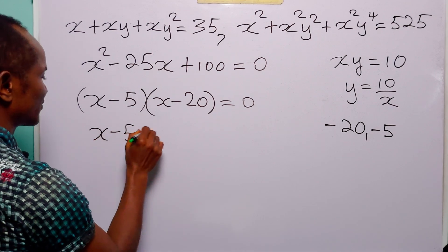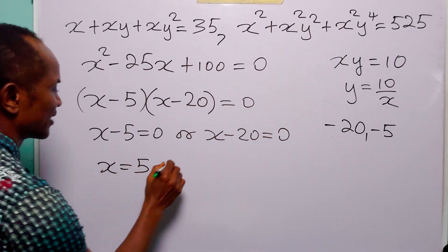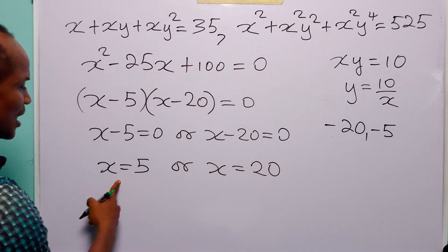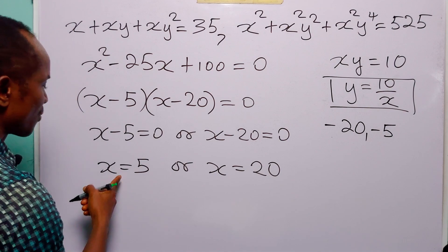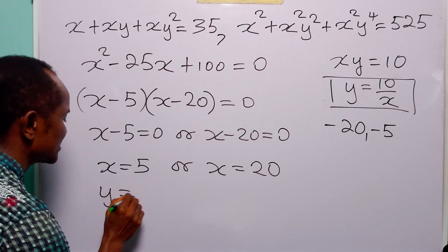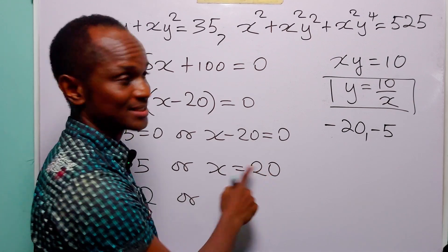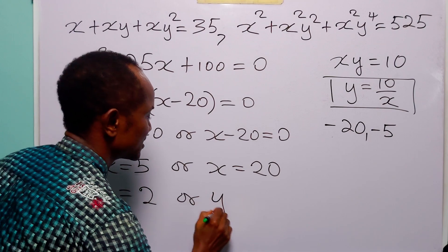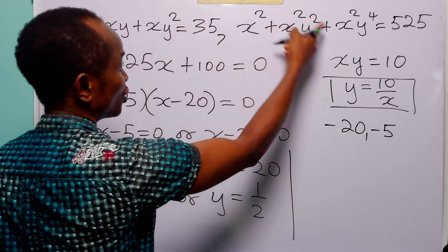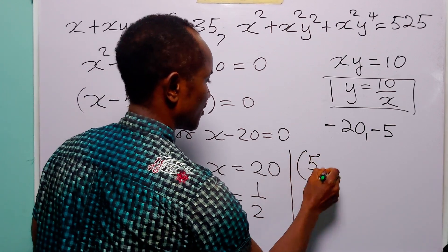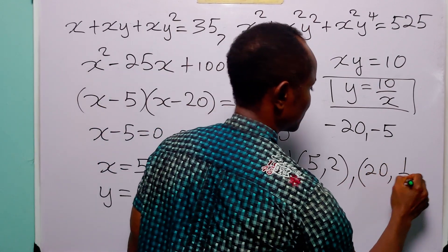From here, we have that x minus 5 equals 0 or x minus 20 equals 0. So x equals 5 or x equals 20. We now find the values of y using the formula y equals 10 over x. When x equals 5, y equals 10 over 5, which is 2. And when x equals 20, y equals 10 over 20, which is one half. So the two points that satisfy these two nonlinear equations simultaneously are (5, 2) and (20, 1/2).